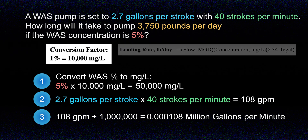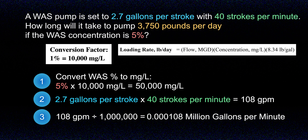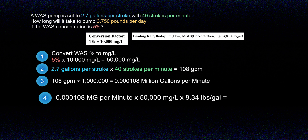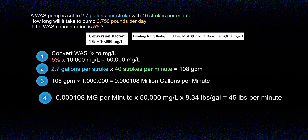This allows us to put it into the loading rate formula shown on screen. Although the formula shows million gallons per day, the per-day part is not always necessary — the time unit could be any unit of time, and this formula can also be used to calculate mass in pounds with no time unit at all. The important thing is that the flow or volume must be converted to million gallons. In step 4, we use the loading rate formula: 0.000108 million gallons per minute multiplied by 50,000 mg/L multiplied by 8.34 pounds per gallon gives us 45 pounds per minute.